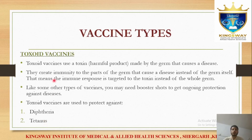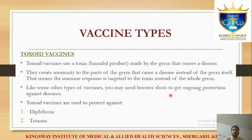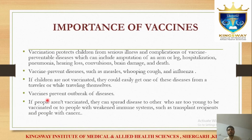Toxoid vaccines use the toxins produced by bacteria or germs rather than the germ itself. They create immunity to the parts of the germs — specifically their toxins — instead of the germ itself. The toxin is extracted and used so the human body mounts an immune response. Toxoid vaccines are used for diseases like diphtheria and tetanus.